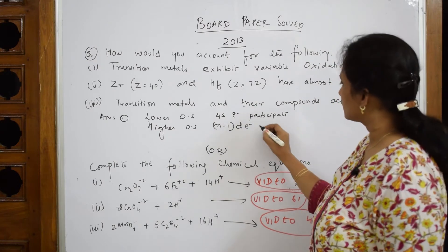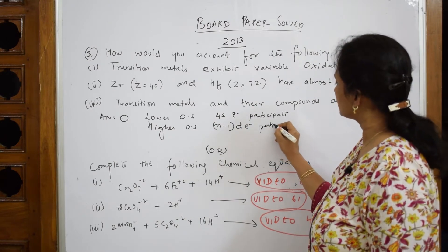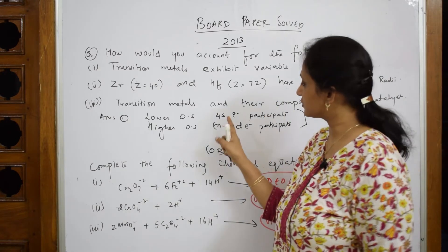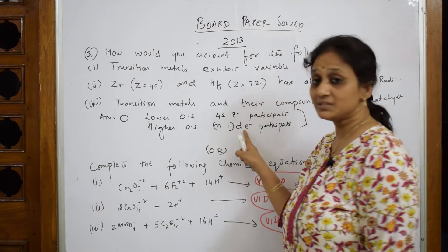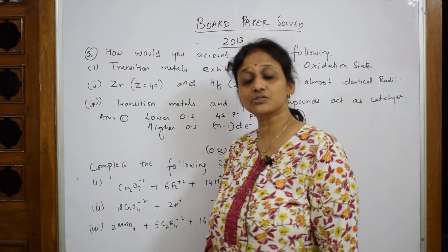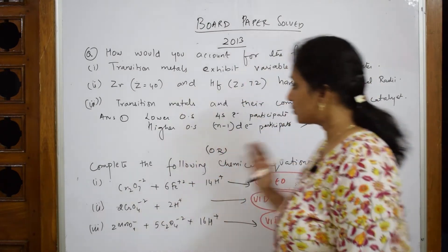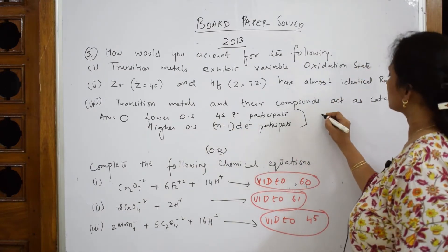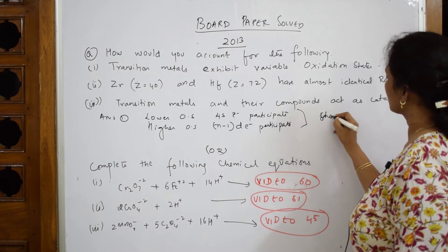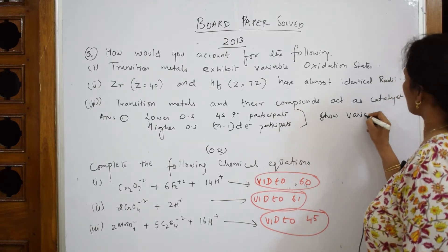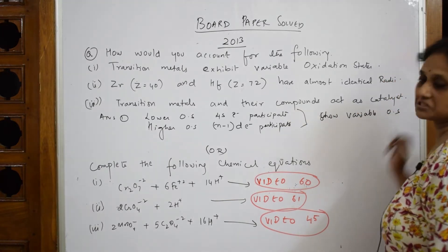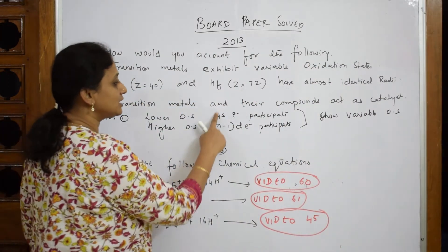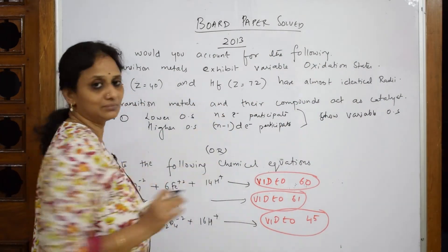Yes or no? Right. So n minus 1 d electrons participate. So now what is happening here, you have variable oxidation. When 4s is participating two electrons, from d you can take out 10 electrons, one after the other. So what is happening due to the participation of these two subshells? It's going to show variable oxidation states. That's it. Only participation of n minus 1 d and ns. If you are writing n minus 1 d, try to write it as ns, simple general way.